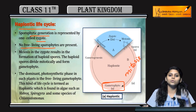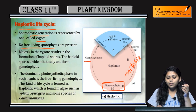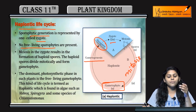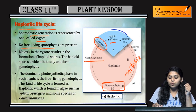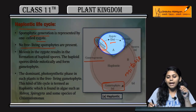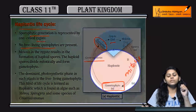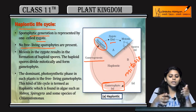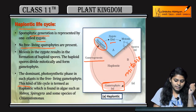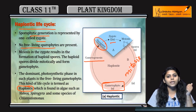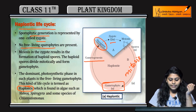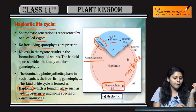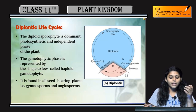Then the gametophytic stage is formed. Gametogenesis occurs, gametes form, syngamy takes place, and a zygote is formed. The zygote is diploid in nature, and the rest of the life cycle phases are haploid. So the dominant phase is the haploid phase. This life cycle is found in algae such as Volvox, Spirogyra, and some Chlamydomonas species.